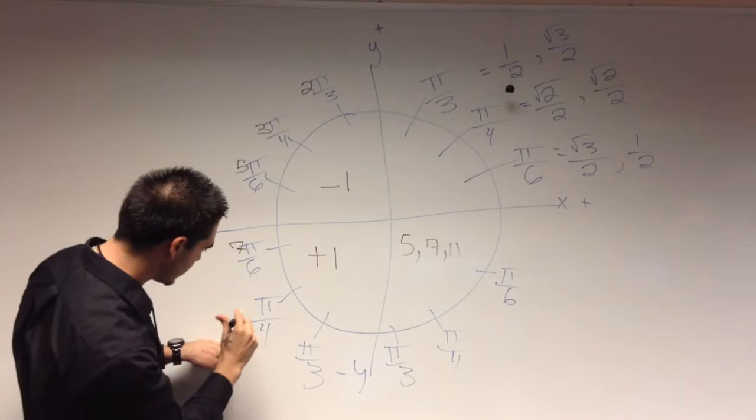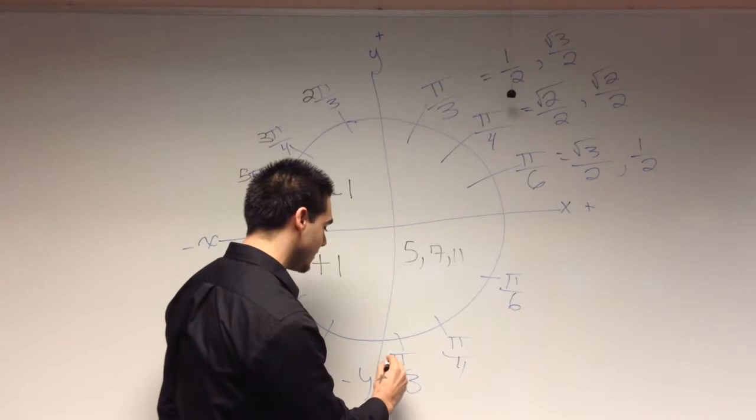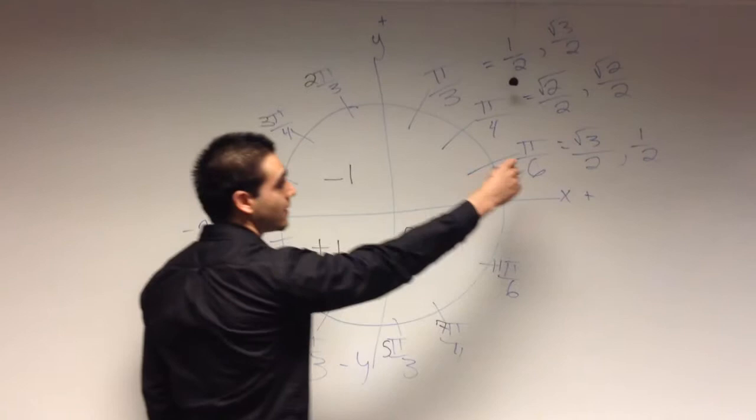And this guy's just in order: 5, 7, 11. 5, 7, 11. That's the whole unit circle. Oh wait, and then we have these guys.